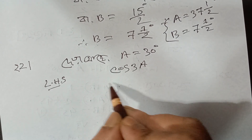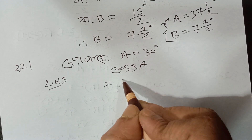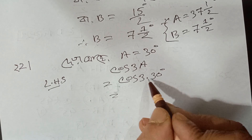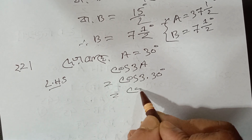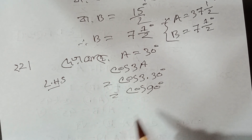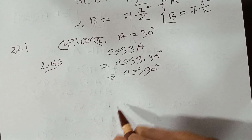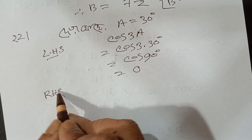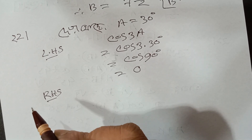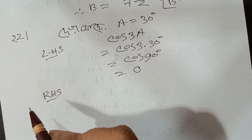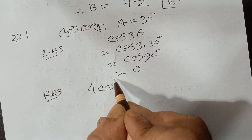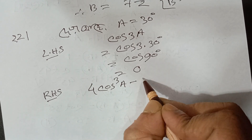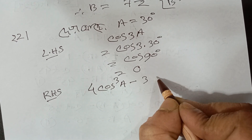1999. Cos 3a. I just have to give it a minute. Cos 3 times 30. Cos 90 degrees. So I have to give it a minute — cos 90 degrees. Cos 3a right-hand side equals 4 cos³a minus 3 cos a.